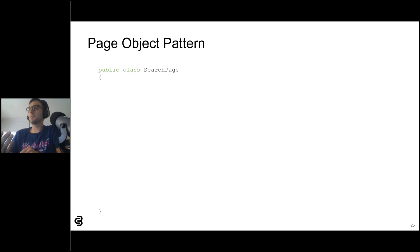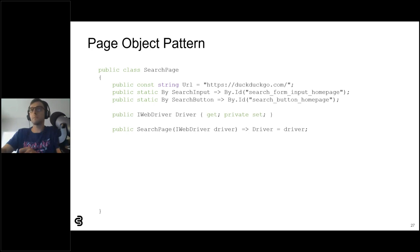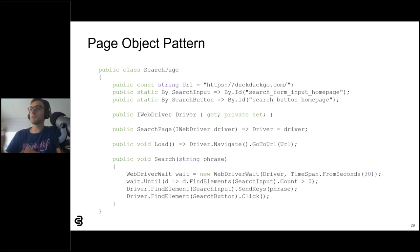In the page object pattern, each page is modeled as a class with locator variables and interaction methods. So a search page could have a constant for the page URL and variables for the search input and search button locators — each with an intuitive name. There would also be a variable to hold the WebDriver reference via dependency injection through the constructor. The first method navigates the browser to the page's URL, and the second method waits for elements to appear, enters the phrase, and clicks the search button.